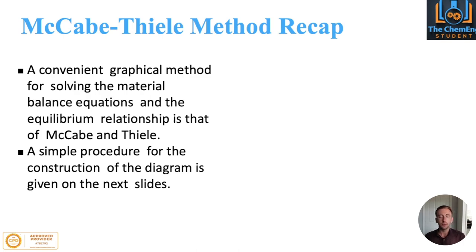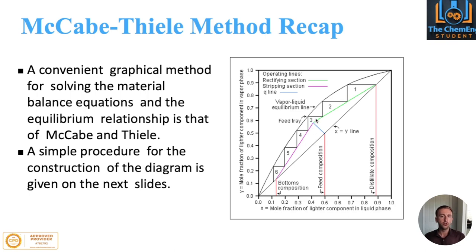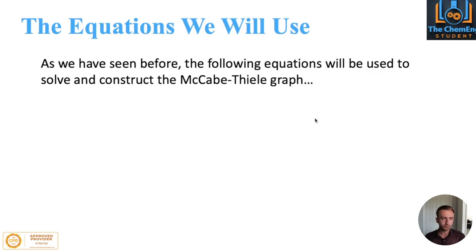It's basically a simple procedure for the construction of the diagram. What we have here is our operating line — the diagonal line where x equals y — our feed points, our top and bottom compositions, our rectifying section (also known as the enriching section), our stripping section (sometimes called the bottom section), and the q-line, which we'll look at in more detail.